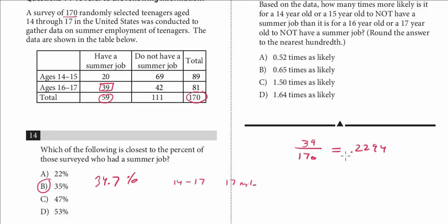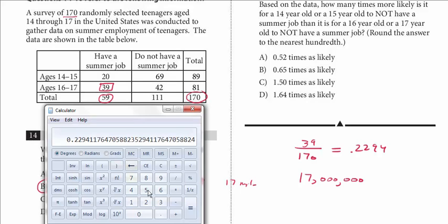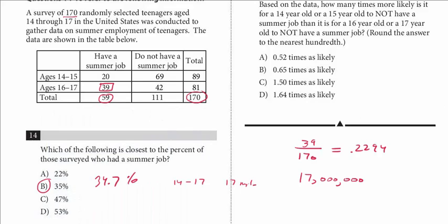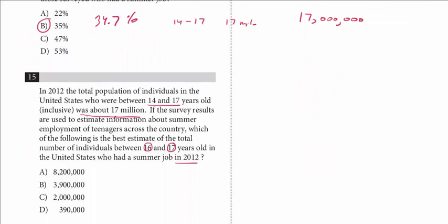We want to, what's called, extrapolate that to figure out the total number of those actual students who had a job based on the total of all of the students or teenagers in the United States. And so what we're doing is extrapolating based on this. And so we still have this percentage. And now we're going to multiply that by 17 million. And that comes out to, let's see, that's 3.9 million. So let's take a look at the answers. Yes. The answer is B.